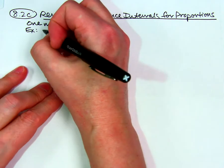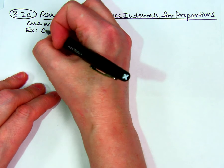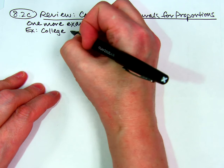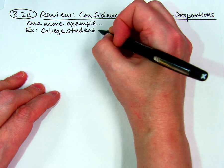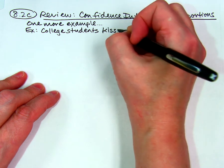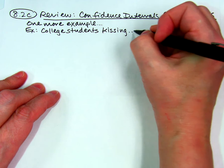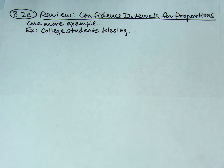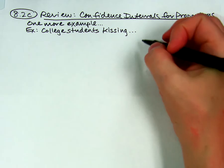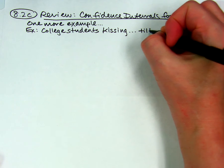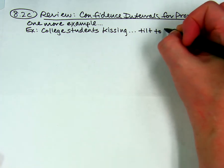So this is kind of a fun example. Somebody was studying college students and couples that were kissing on campus. Remember back before COVID when we could walk around campus and kiss people if we wanted to, or hug people? Anyway, this particular person was studying whether the couple — this is a silly thing — whether the couple tilts their head to the right or to the left when they kiss, because if you don't tilt, you're going to crash noses. Think about that for a minute.